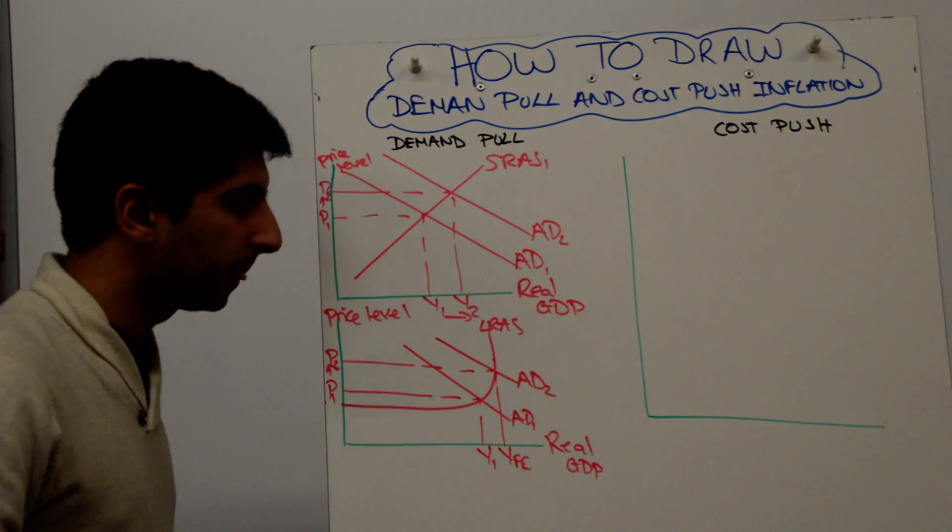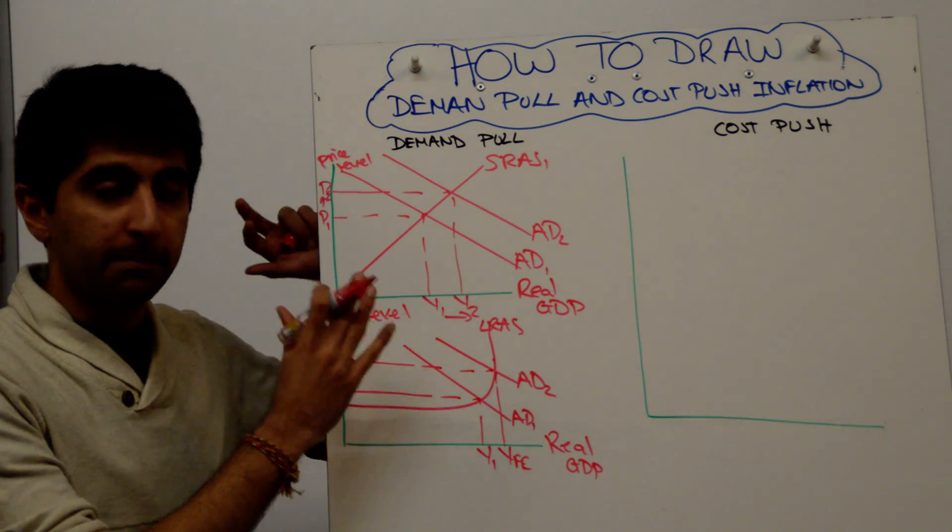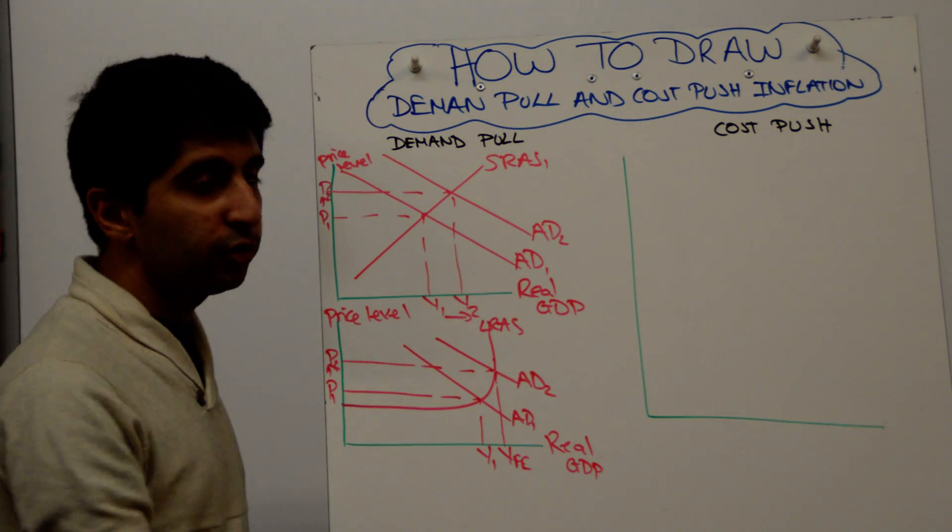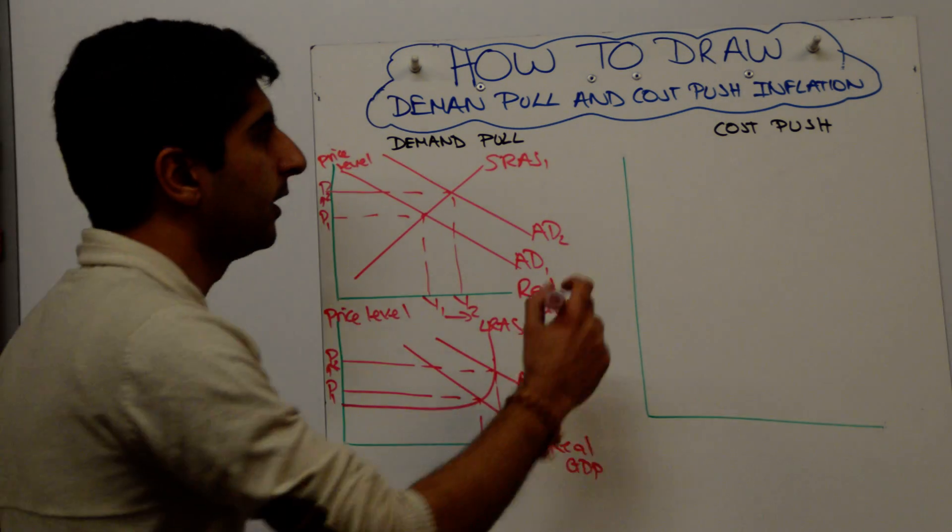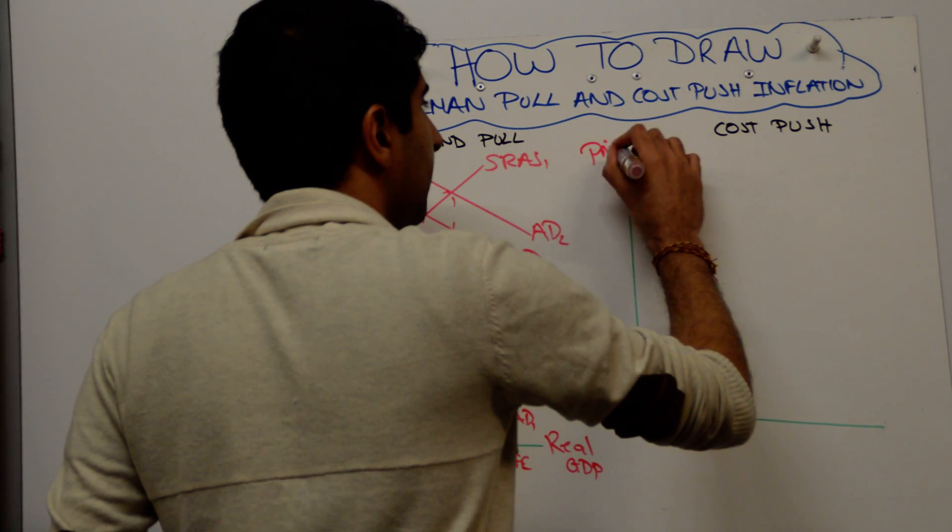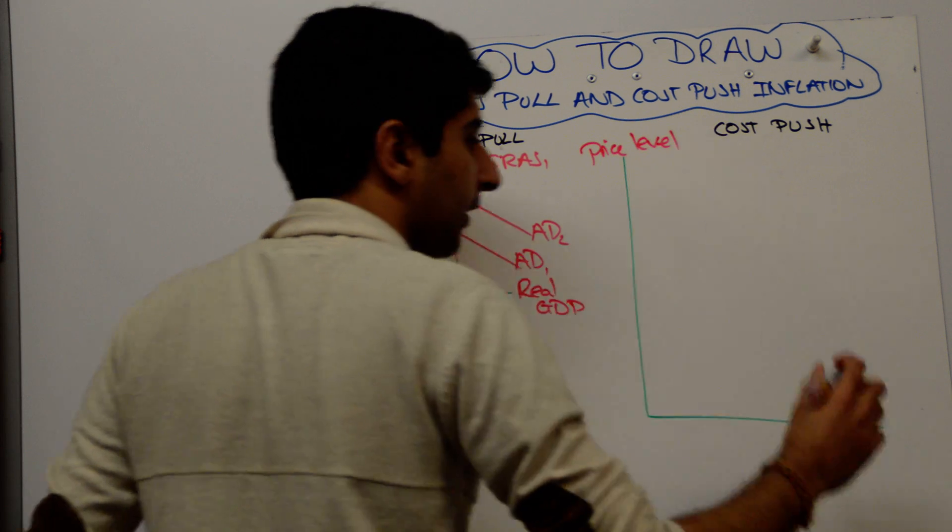All right, so that's how we can show demand-pull inflation. Cost-push inflation - simply it's a shift to the left of SRAS. So price level on the Y-axis and real GDP